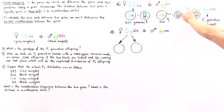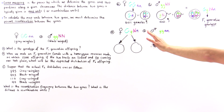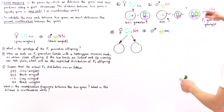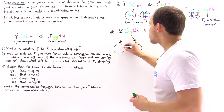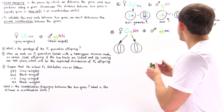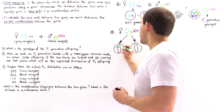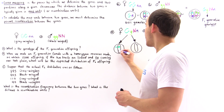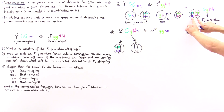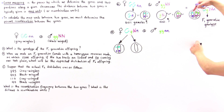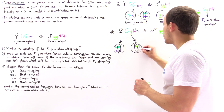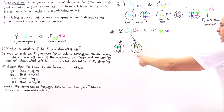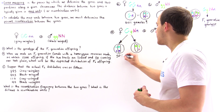When meiosis takes place, the chromosomes separate, forming two gametes: one with uppercase G and lowercase n, and one with lowercase g and uppercase N. So 50% of the gametes have this genotype and the other 50% have that genotype. The male only forms one type of sperm cell — lowercase g, lowercase n — and that represents 100% of his gametes.